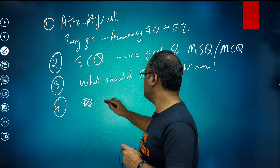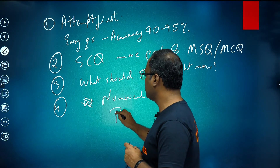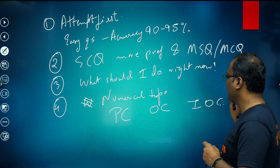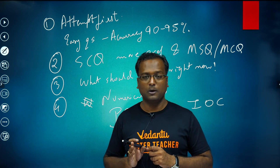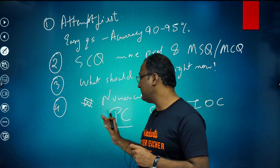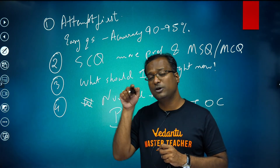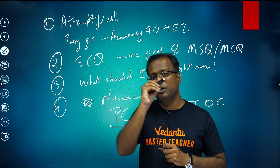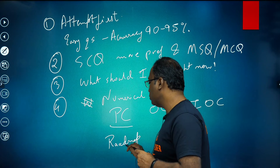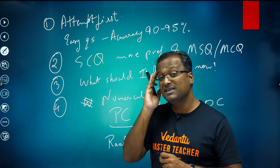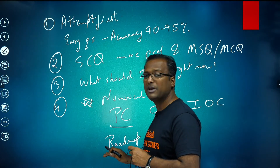Now let's talk about how to approach numerical type questions. I'll divide this into physical, organic, and inorganic chemistry. Physical chemistry numerical questions are generally of moderate to high difficulty level. If you are sure of the concept, go ahead and attack the question — but before diving into the math, make a rough road map in your mind: how do you plan to get from the given data to the asked answer without getting stuck? If the path is clear, solve it — you'll likely get it correct.